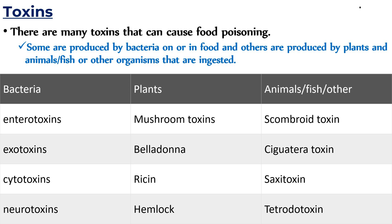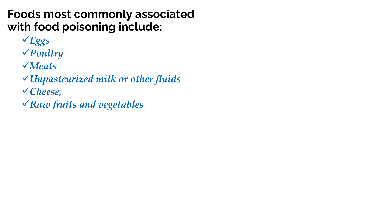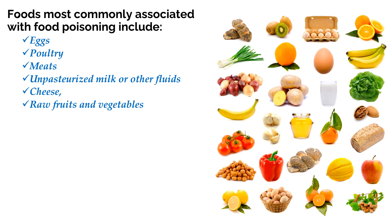In addition, there are many toxins that can cause food poisoning. Some are produced by bacteria in food, and others are produced by plants, animals, fish, or other organisms that are ingested. Foods most commonly associated with food poisoning include eggs, dairy products, meats, poultry, cheese, raw fruits and vegetables — usually unwashed ones — and nuts and spices.